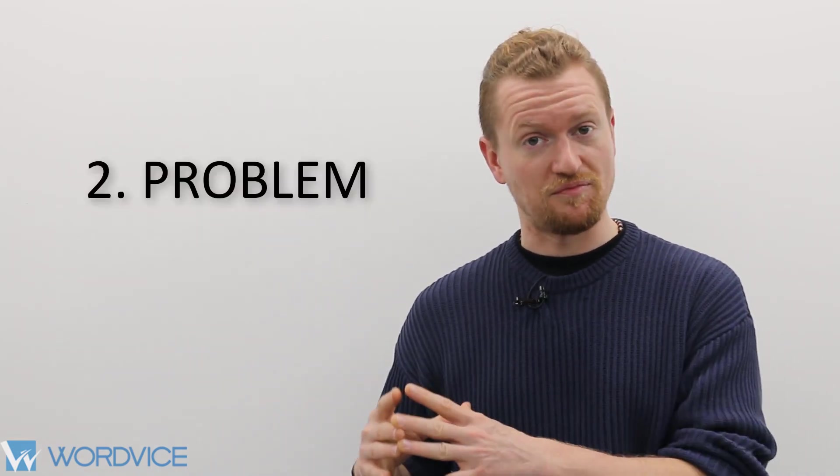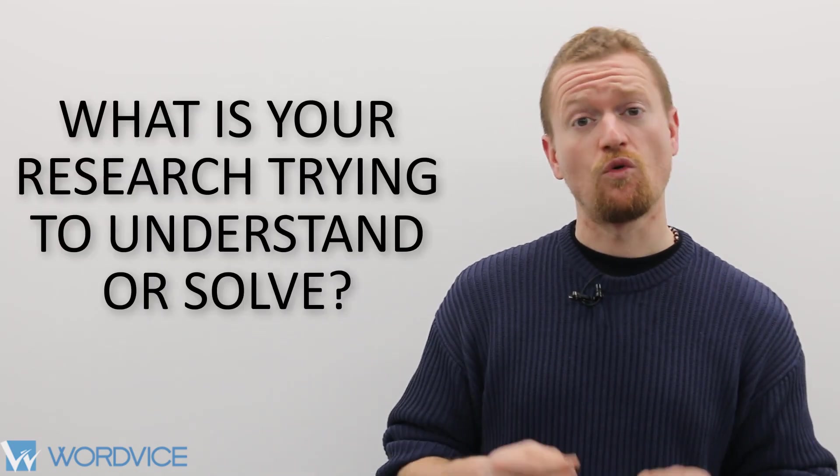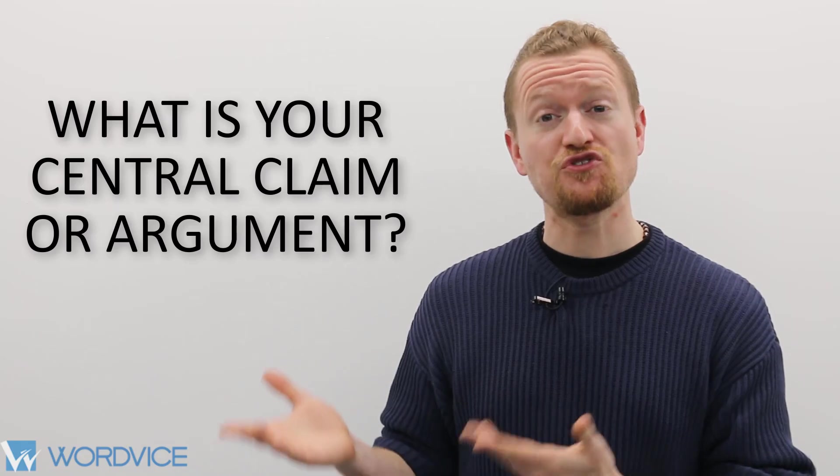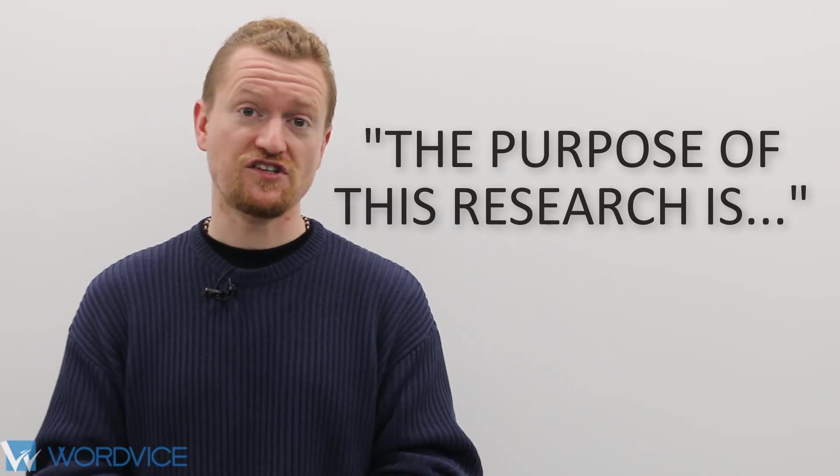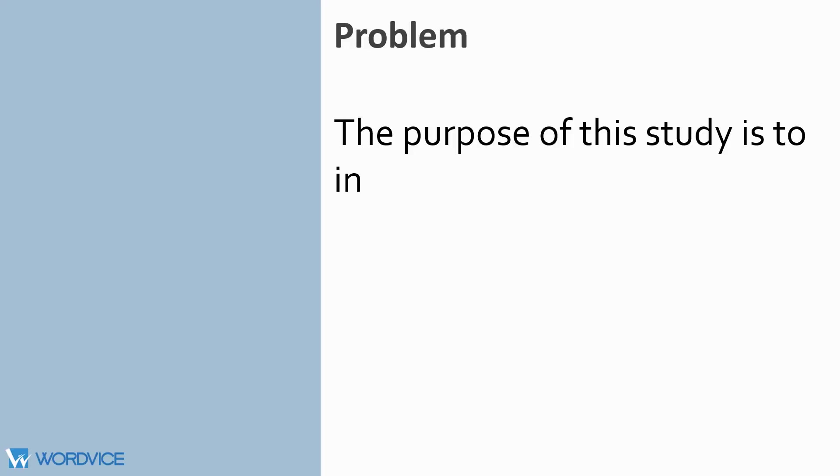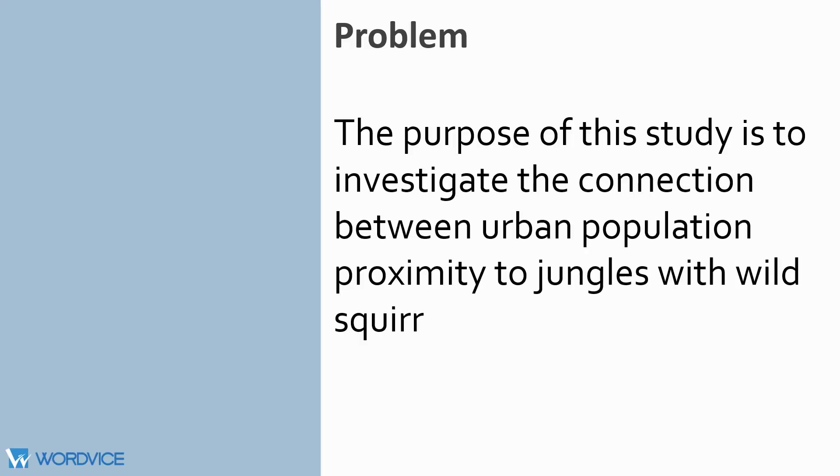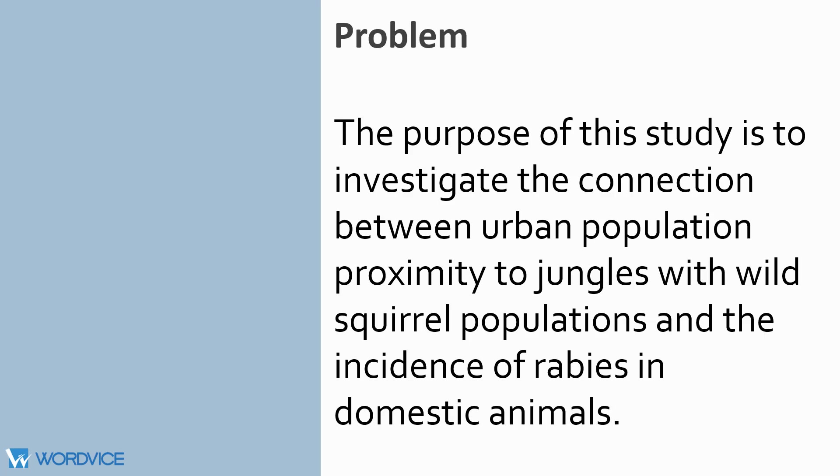Immediately following the purpose and motivation section, you need to state your problem. What is your research trying to better understand? Or what questions is it trying to solve? What is your central claim or argument? Don't be afraid to start your purpose sentence clearly and frankly. The purpose of this research is, by being clear and direct, you're going to let the reader know your intentions in the study. A problem statement might look something like this: The purpose of this study is to investigate the connection between urban population proximity to jungle animals with wild squirrel populations and the incidence of rabies in domestic animals. We've started out with the purpose of this study is to. Again, this is a great way to state your problem and indicate to the reader what your study is about.